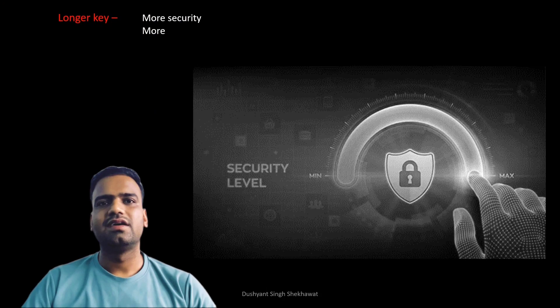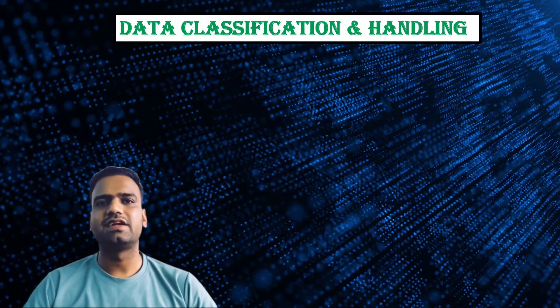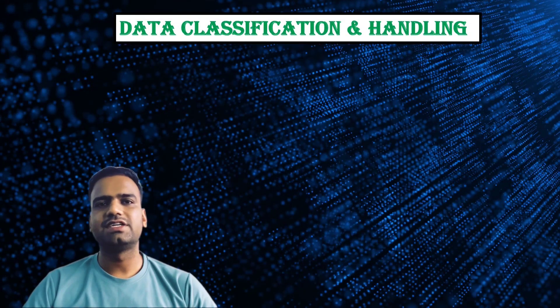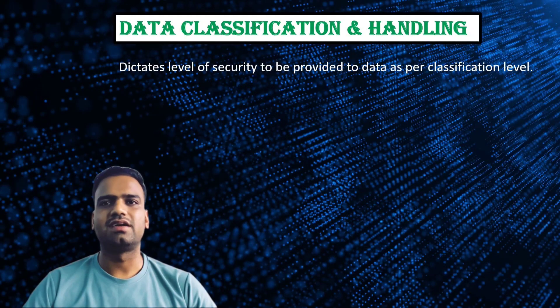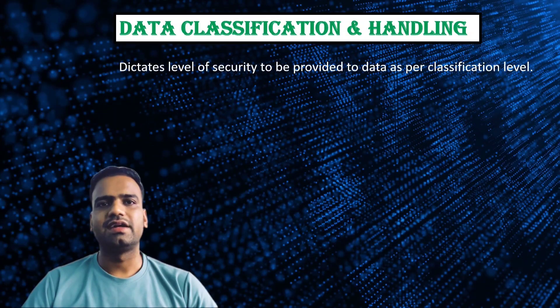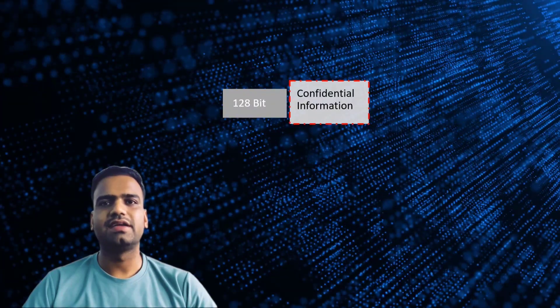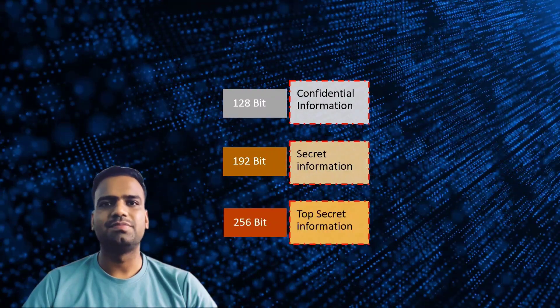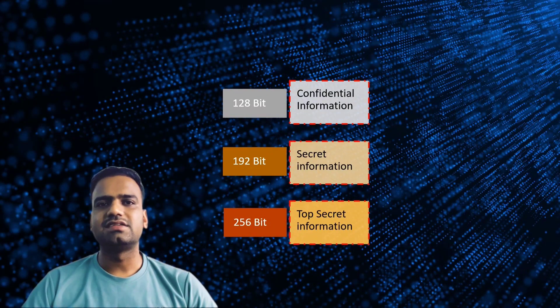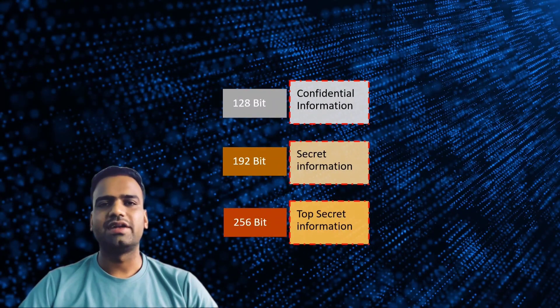The length of the AES key is decided by the desired level of security. A longer key provides more security but also takes longer to encrypt and decrypt data. Organizations often have a data classification and handling policy that determines classification of information based on sensitivity and criticality. It is recommended to use a 128-bit key for confidential information, a 192-bit key for secret information, and a 256-bit key for top secret information. This is a recommendation from the NSA but does not apply to every organization.